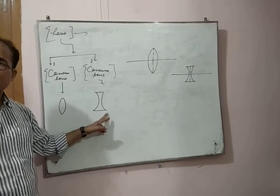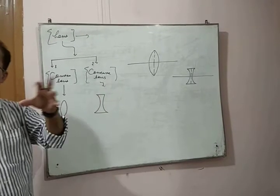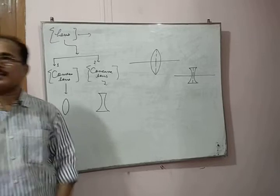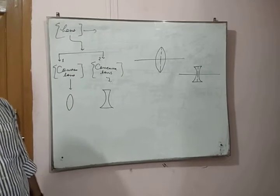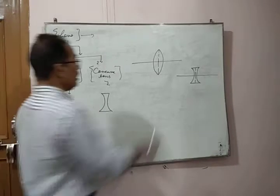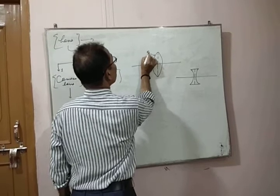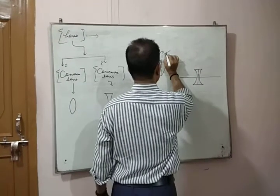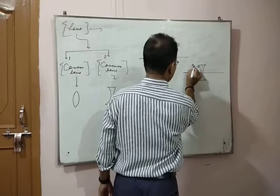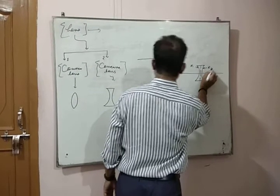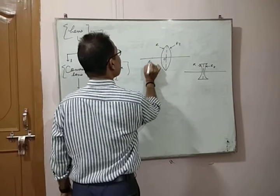There are different terms which are frequently asked in examinations to define: principal axis, optical center, first focal point, second focal point. You can see these are the terms and their positions in the lens. This is your convex lens, with refracting curved surfaces R1 and R2.